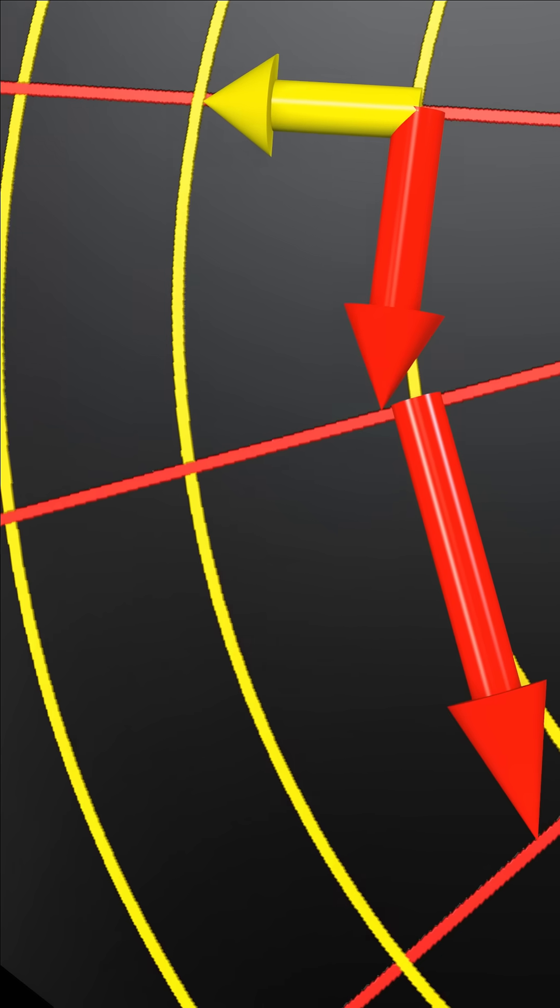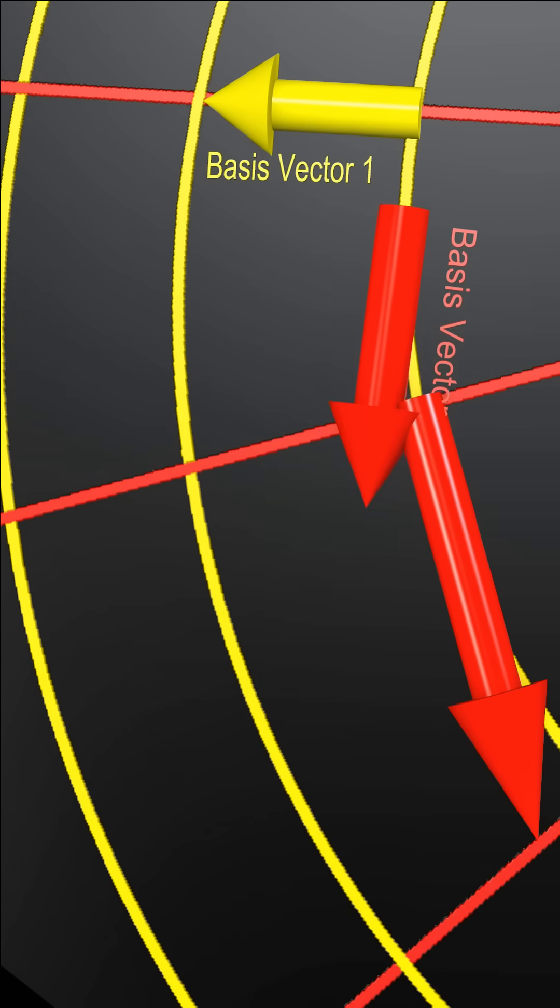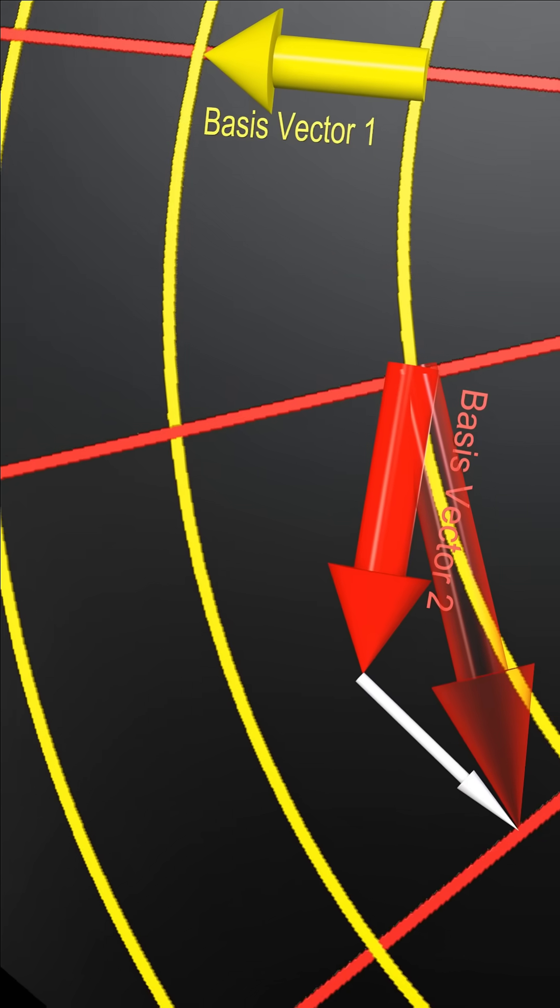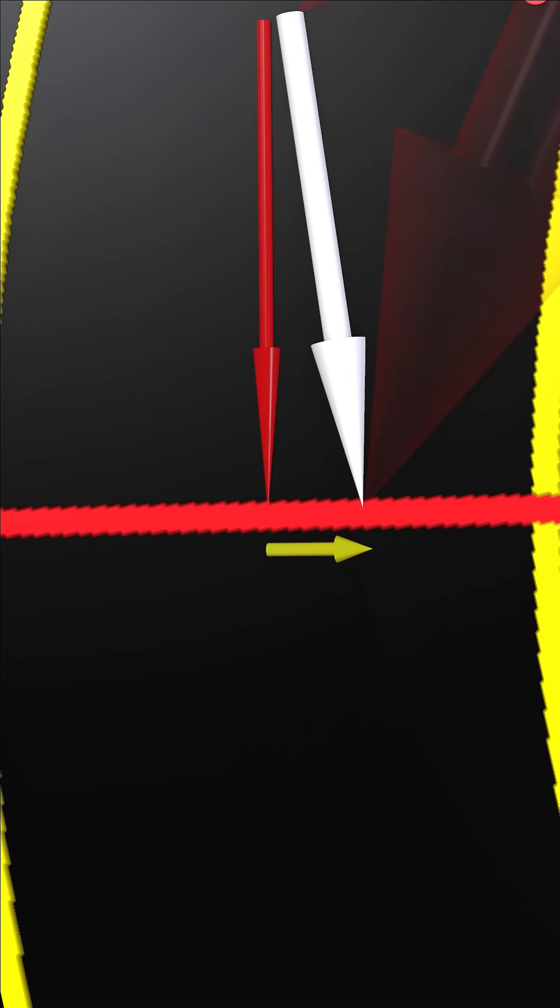Let's move one of the basis vectors by exactly one unit as shown. The rate at which the basis vector changes is described by the white vector. The white vector can be represented as a linear combination of the two basis vectors at this point.